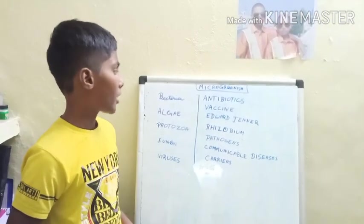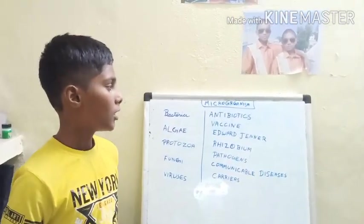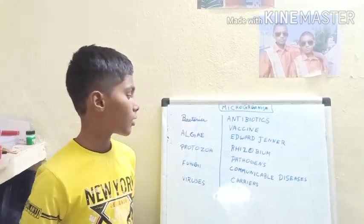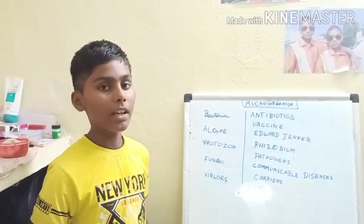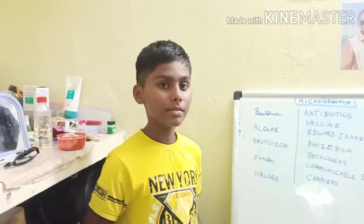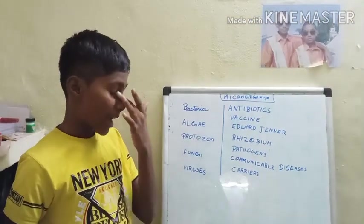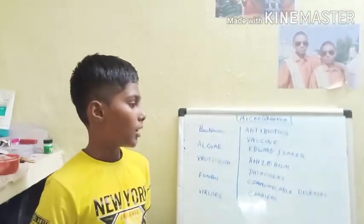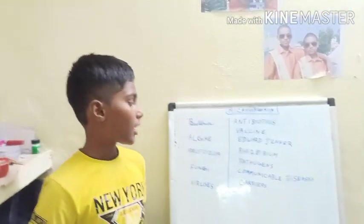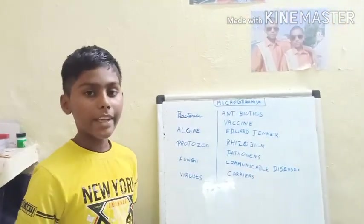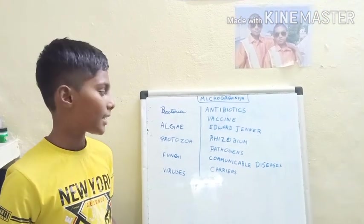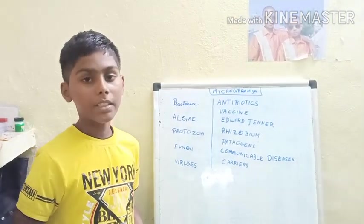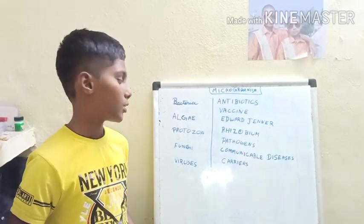Microorganisms are not only used to make medicines. They also help in the growth of plants. Plants require nitrogen, but they cannot take nitrogen from the air directly, even though it is available abundantly in the atmosphere.